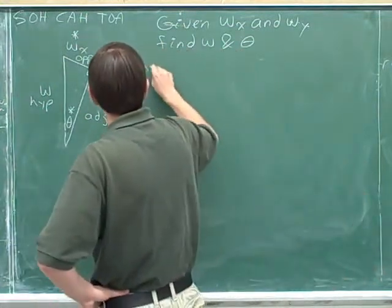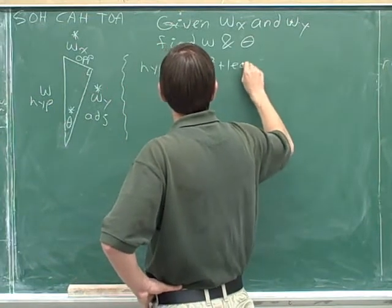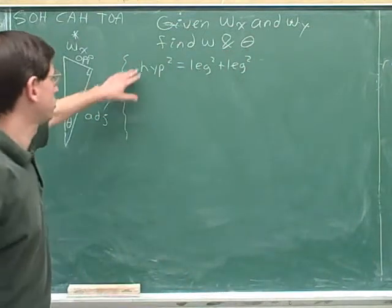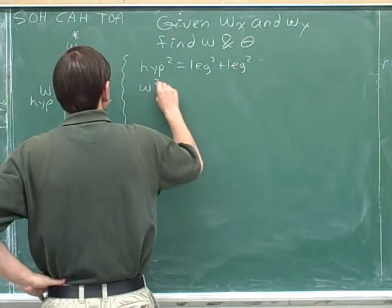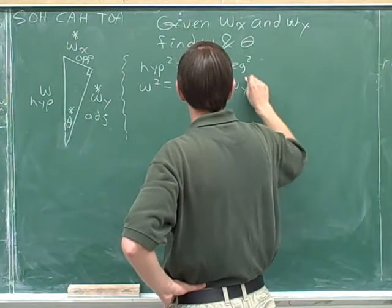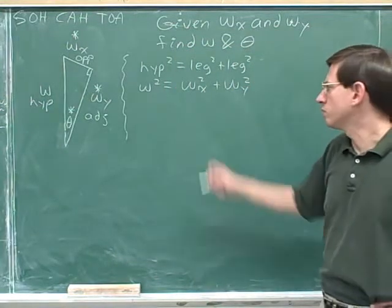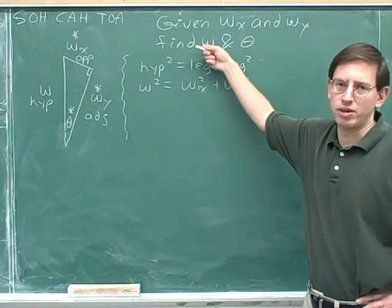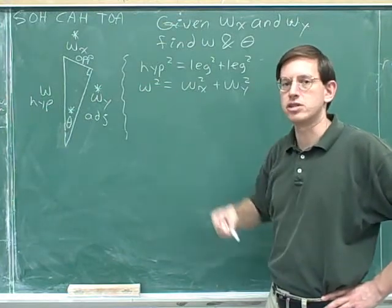Let's write the general formula first of all. Hypotenuse squared equals leg squared plus leg squared. Then we plug in. It's always a good idea to write the general formula first and only then plug in. Our hypotenuse is w. One of the legs was w sub x and the other leg was w sub y. Don't forget to square each term. Now what was our goal? Which variable are we trying to solve for here? Well, remember we're trying to solve for w. So we have to get the w by itself.